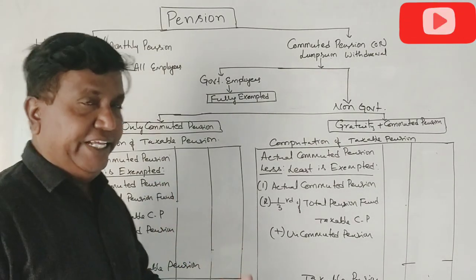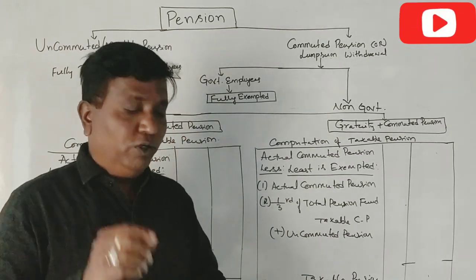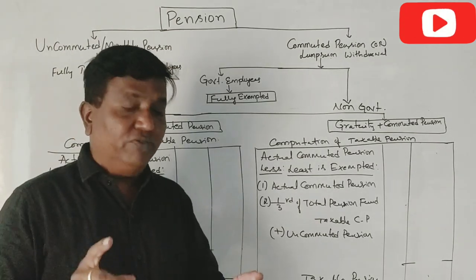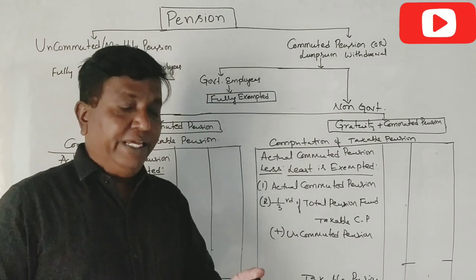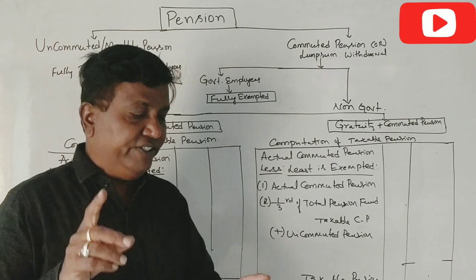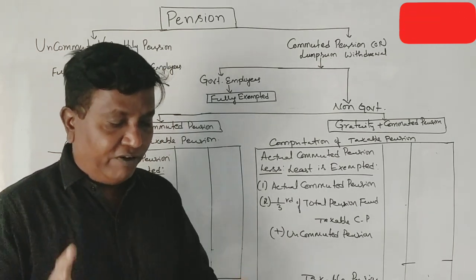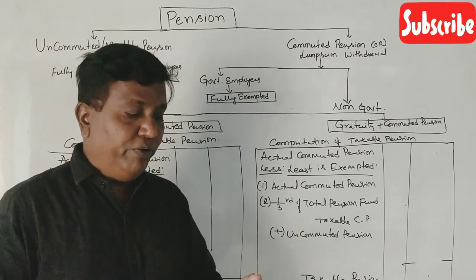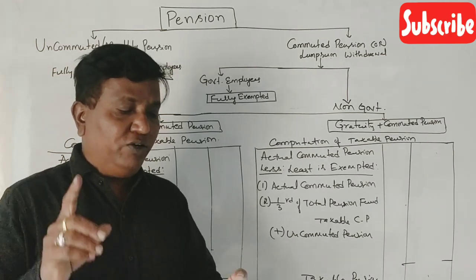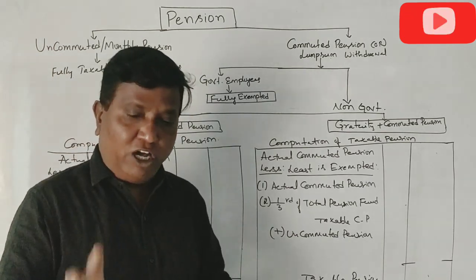Students, one question is on pension. Mr. Chandrashaker retires from LNN Limited on 30th of June 2020. He gets Rs. 20,000 per month as pension up to 31st of January 2021. With effect from 1st of February 2021, he gets 60% of pension commuted for Rs. 6,00,000. Compute taxable pension for the assessment year 2021-22. Does it make any difference if he gets a gratuity also?